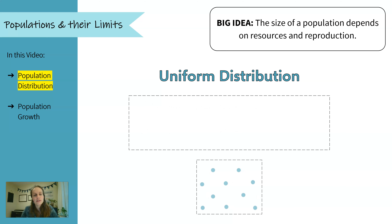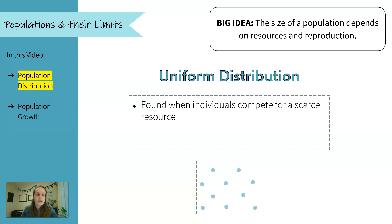Second, the members of a population could have a uniform distribution — this is when they're evenly spread out. Lots of times we find this when individuals compete for a scarce resource. An example of this is penguins; their resource is land. Penguins tend to be very territorial, so they'll spread out over an area of land so each penguin can defend their own section.